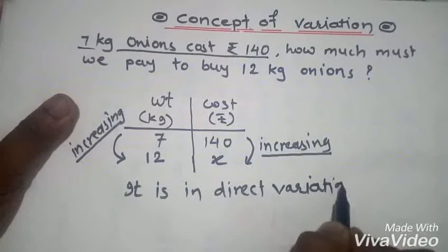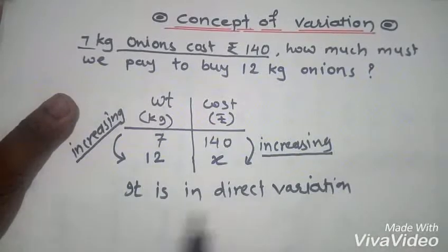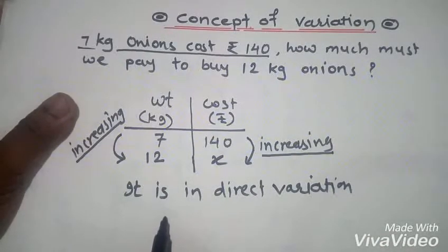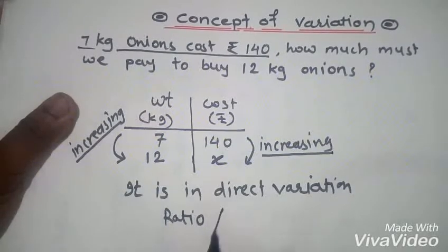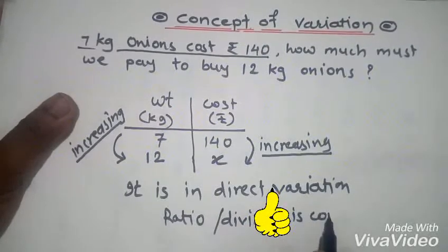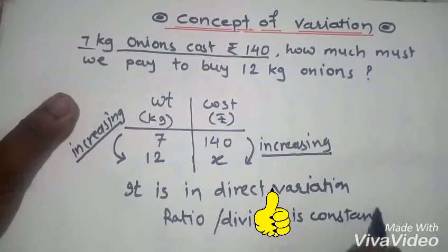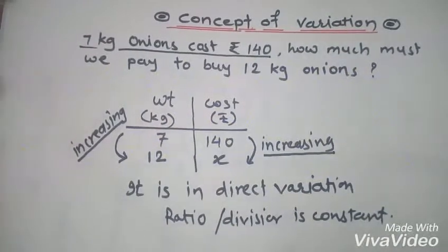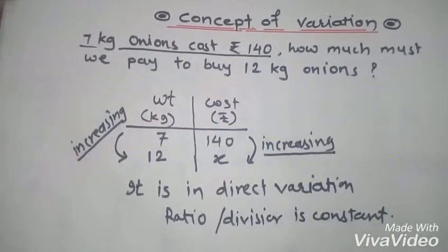If these changes are equal, we say it is in direct variation. Always keep in mind: whenever two quantities are in direct variation, their ratio — or division — is constant.